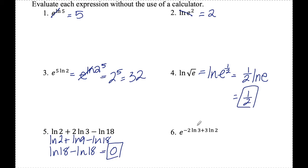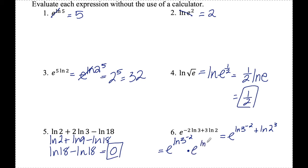Number six: e to the negative two ln three plus three ln two. I'm first going to rewrite these multiplications in front as exponents, so I have e to the ln of three to the negative two plus ln of two cubed. Since adding exponents means the base was being multiplied, I can split this as e to the ln of three to the negative two times e to the ln of two cubed. The e and ln cancel in each factor, leaving three to the negative two times two cubed. Three to the negative two is one over nine, and two cubed is eight, so this simplifies to eight over nine.